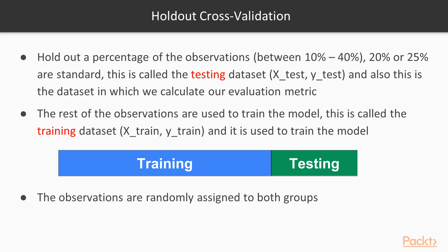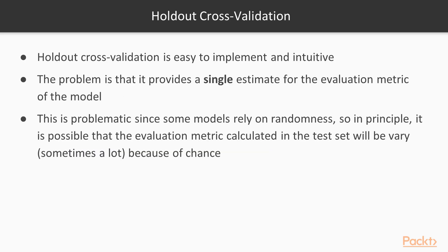In holdout cross-validation, we hold out a percentage of observations, giving us two datasets: a training dataset and a testing dataset. We use the testing dataset to calculate our evaluation metric, and the rest of the data is used for training the model. The advantage of holdout is that it is very easy to implement and intuitive. However, the problem is that it provides only a single estimate for the evaluation metric, which is problematic since some models rely on randomness, meaning the evaluation metric can vary a lot due to random chance.